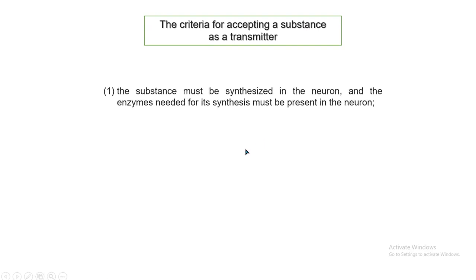But for any chemical to be accepted as a neurotransmitter, there are certain criteria. The first one is that it must be synthesized in the neuron and the enzyme required for its synthesis must be present in the neuron. The condition is that it cannot be synthesized outside the cell and then incorporated and transported into the cell; the neuron must have the enzymes for synthesis inside it.